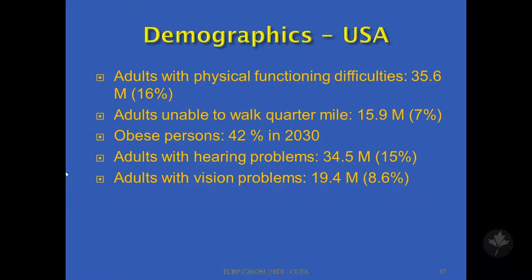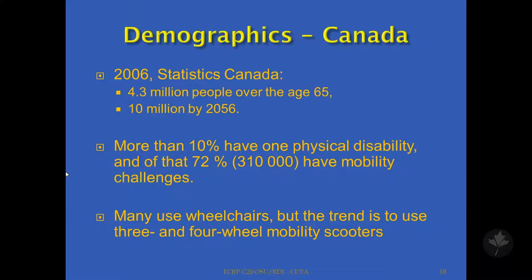This is a quick overview of the demographics as we found them in the U.S. Adults with physical functional difficulties, about 35 million or 60% of the population. Adults unable to walk a quarter mile, 60 million or 7% of the population. Obese persons estimated to be 42% in 2030. The last report from the U.S. Medical Association estimates that one in three Americans will be obese in the next decade. Adults with hearing problems, 34 million or 15%, and adults with vision problems, about 19 million or 86%.